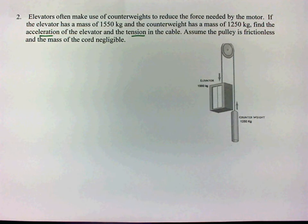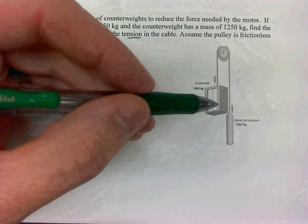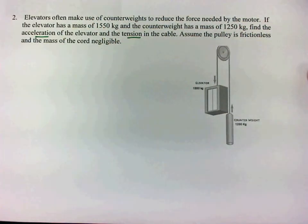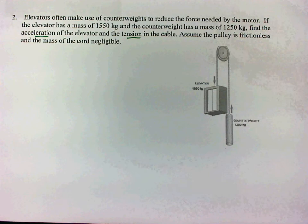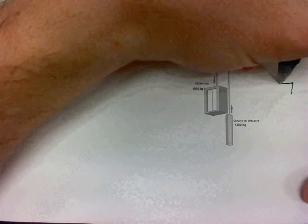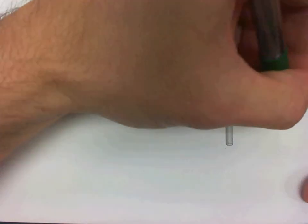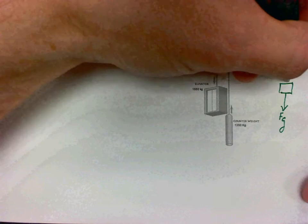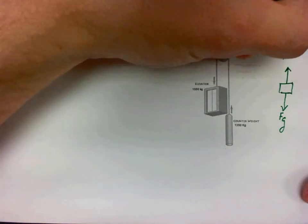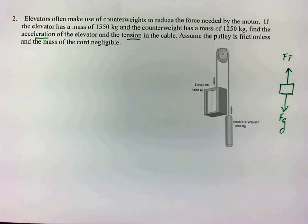We're going to start by focusing on the acceleration part. Both of these objects are being suspended by a cable. So both of the free body diagrams for the objects would have FG pulling down and tension force pulling up. Those are the two forces acting on both objects.